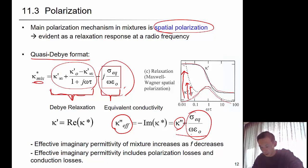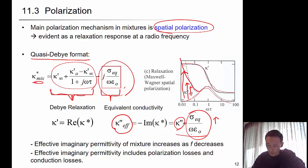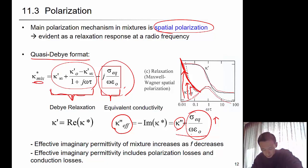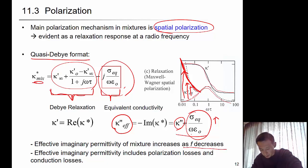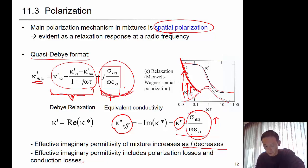As the frequency decreases, this conductivity portion increases, which is why you will have an increase in effective kappa double-prime. The effective imaginary permittivity increases as the frequency decreases, and it includes both polarization losses and conduction losses — the ohmic loss contributes as the conduction loss term.